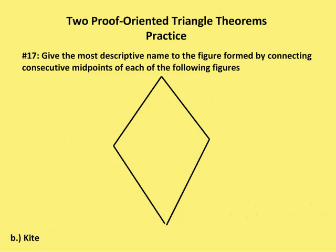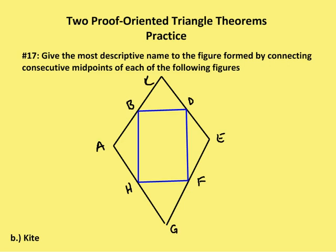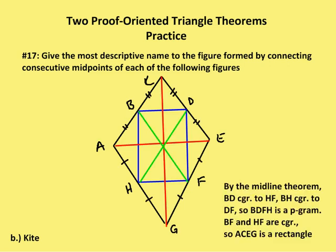Next figure is going to be a kite. Give the most descriptive name to the figure formed by connecting consecutive midpoints of a kite. We go ahead and connect those segments. Again, we have the same type of proof that we did with the rhombus by the midline theorem. We draw our diagonals AE and CG. By the midline theorem, BH and DF are congruent. So we have two pairs of opposite sides of a quadrilateral that are congruent — we have a parallelogram. Then we can see that BF is congruent with HD, and because those two diagonals are congruent, the figure again is a rectangle.